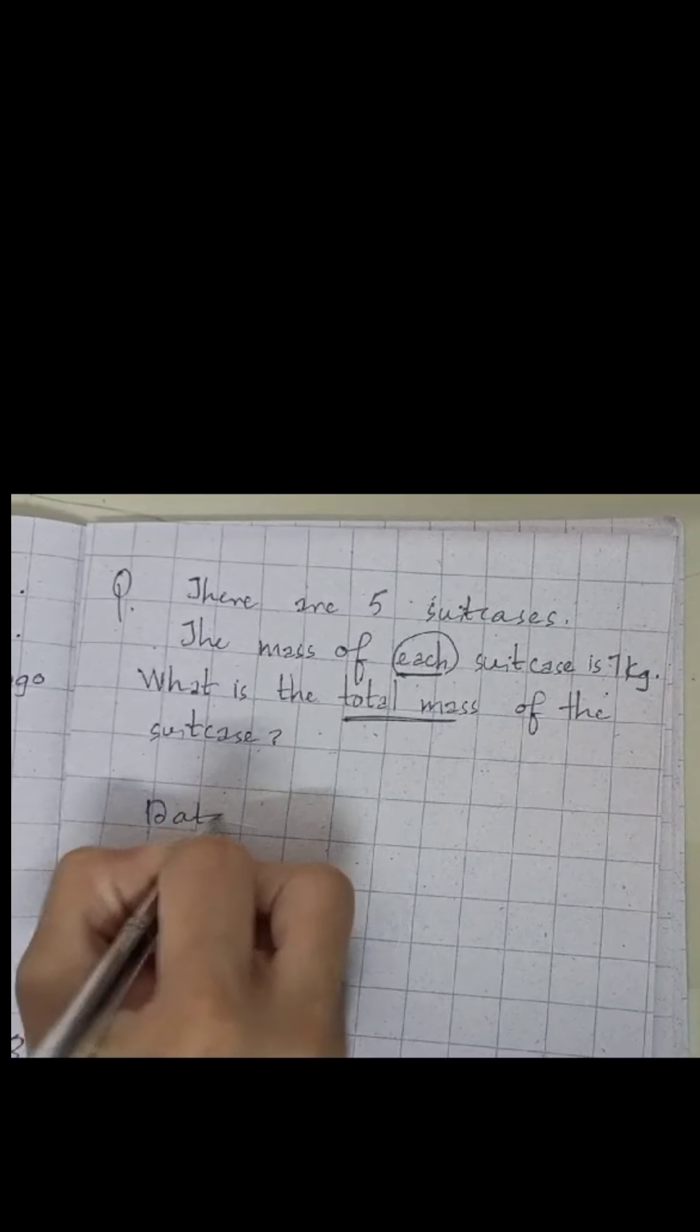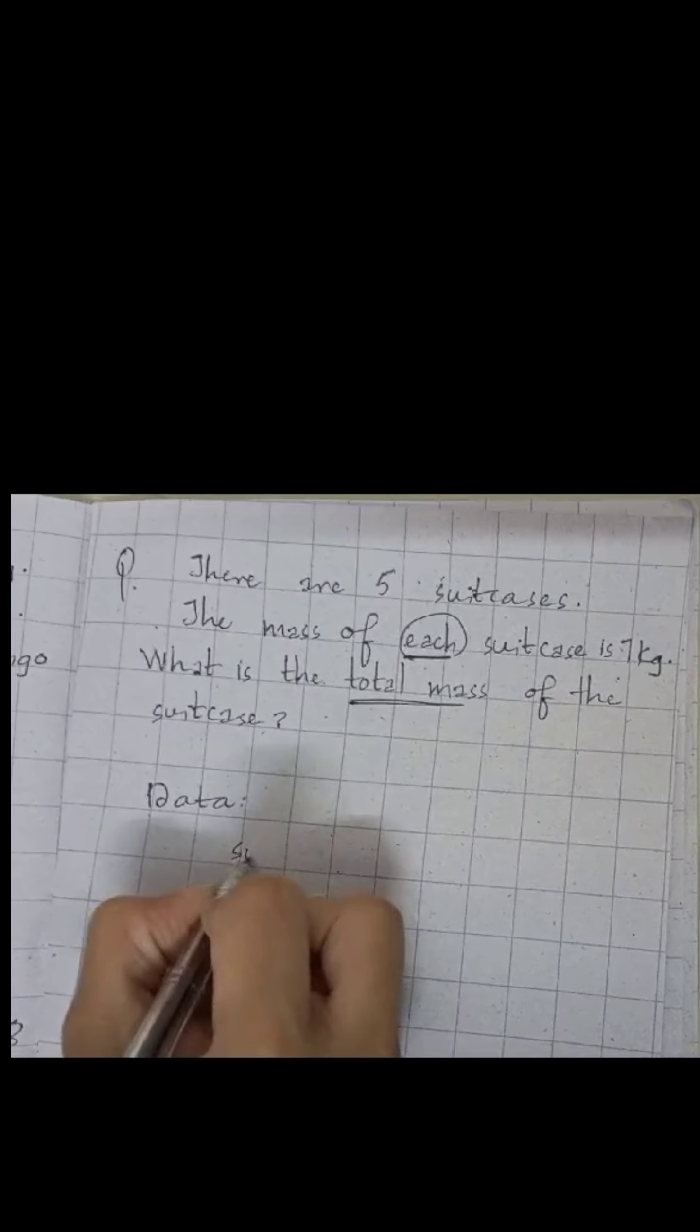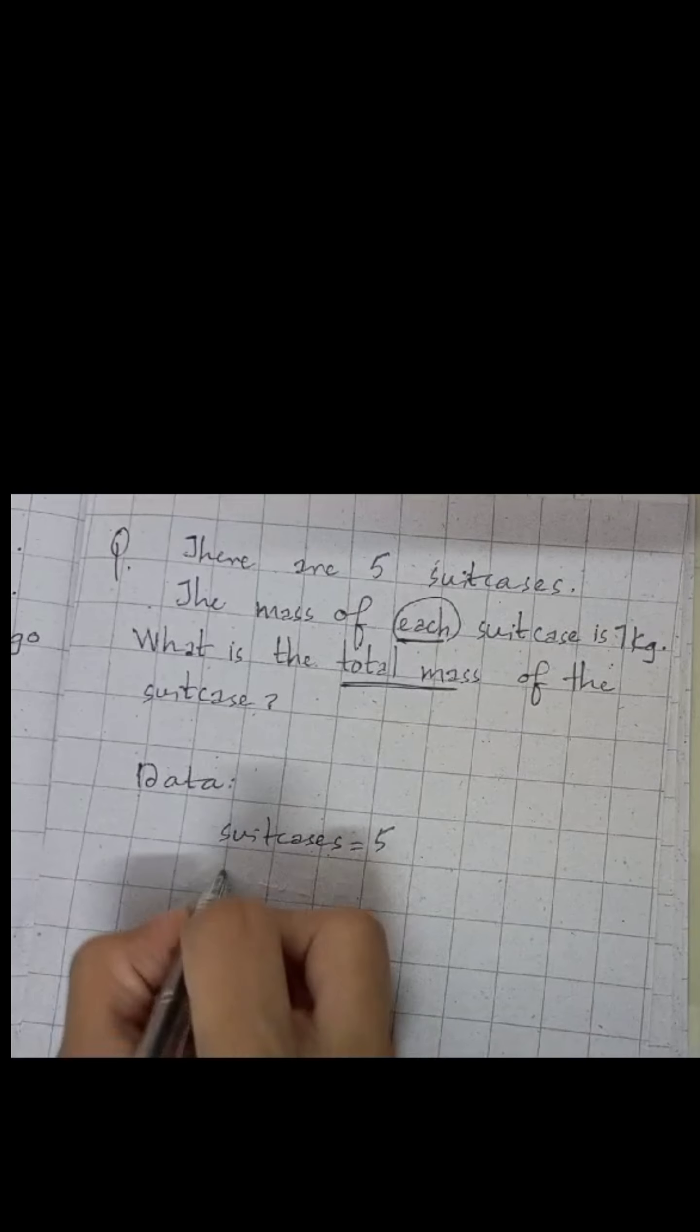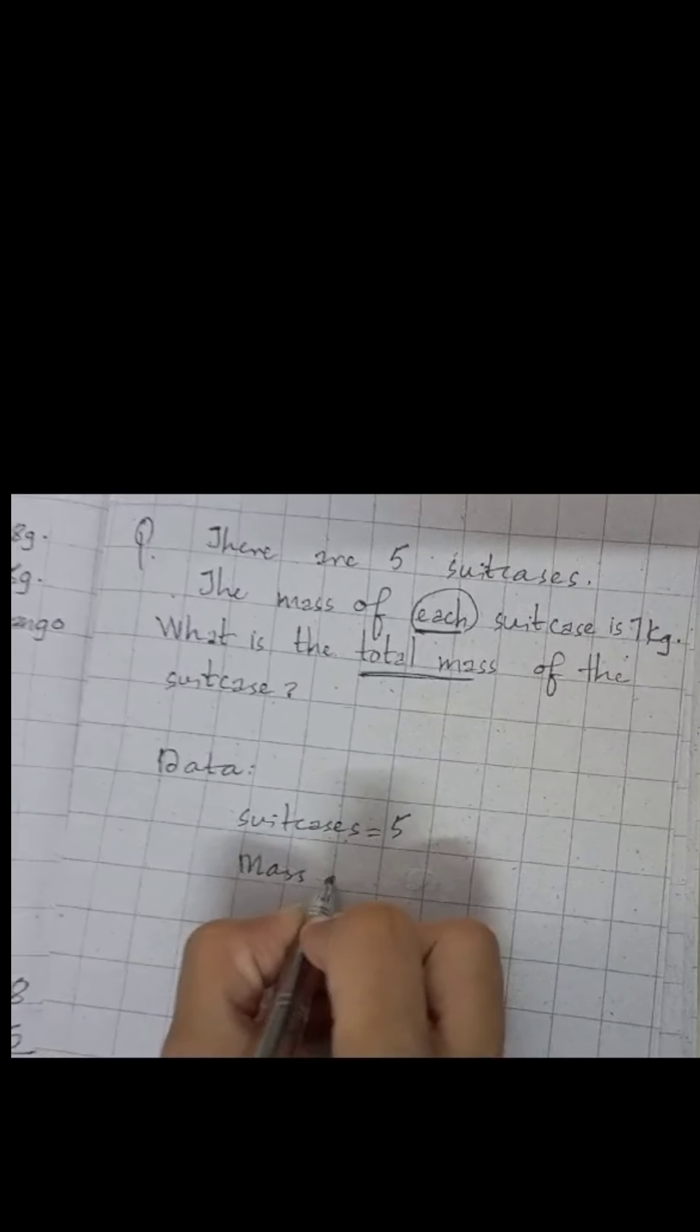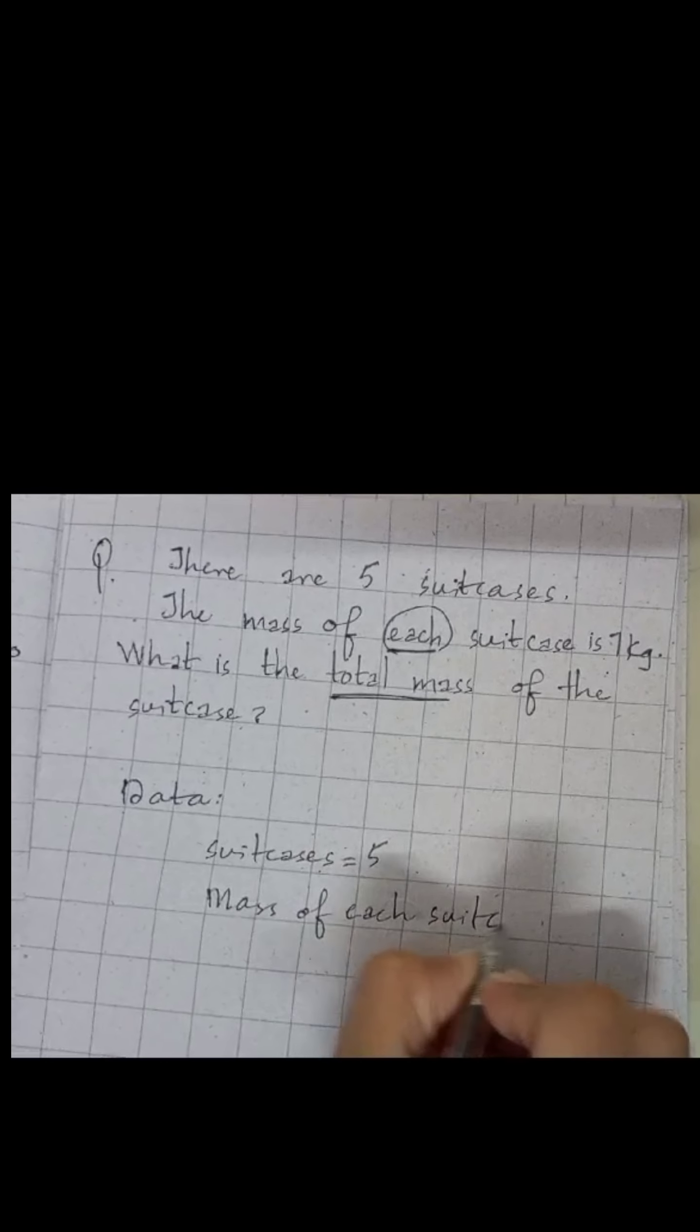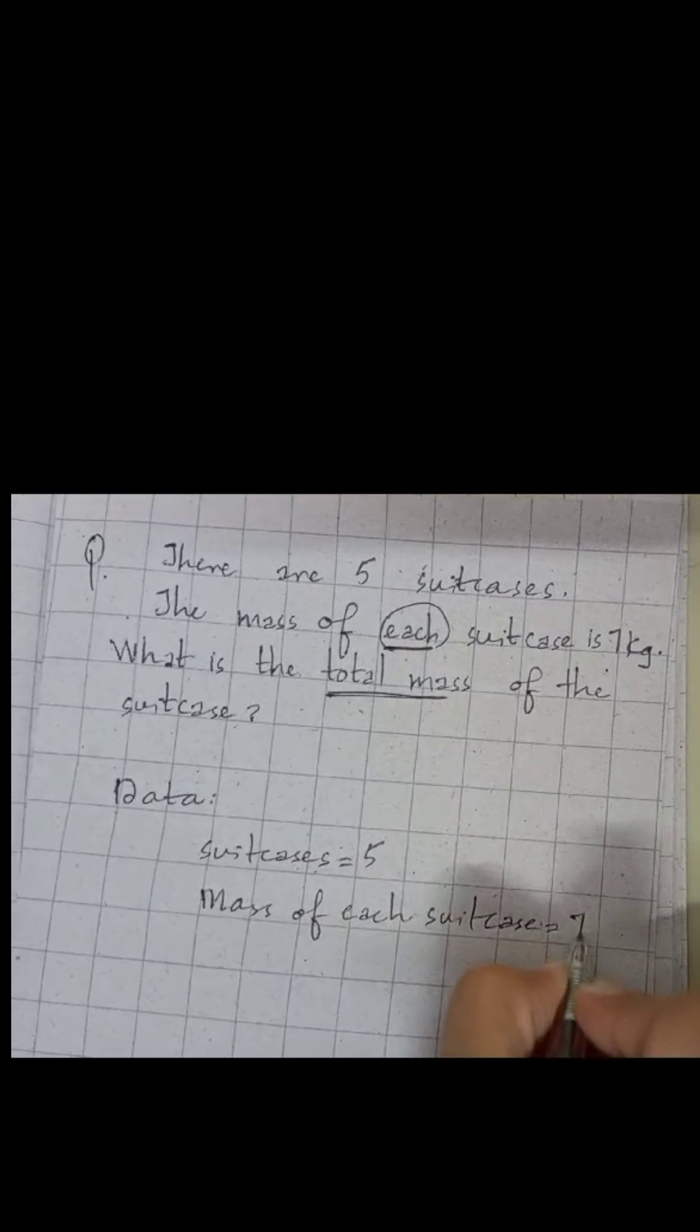How are we going to do this? How many suitcases do I have? Suitcases equals 5. You can write: mass of each suitcase is 7 kg.